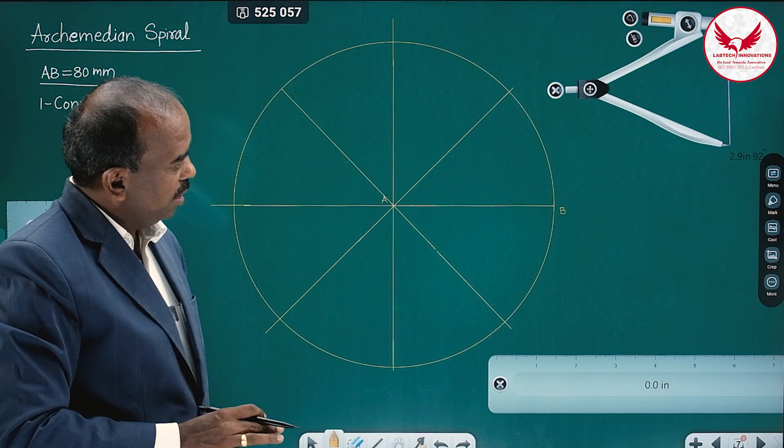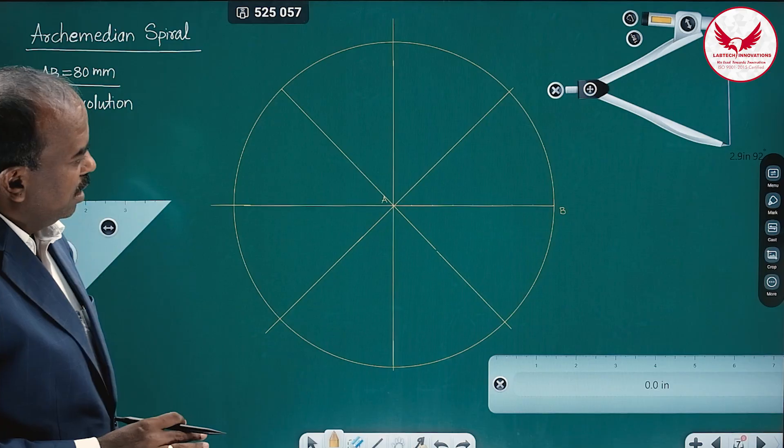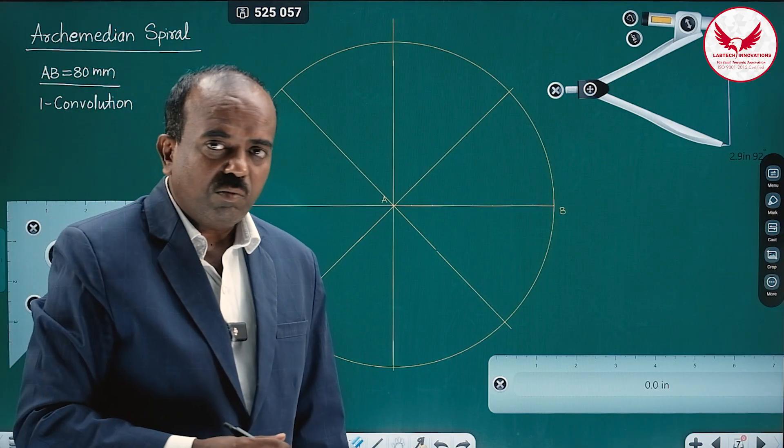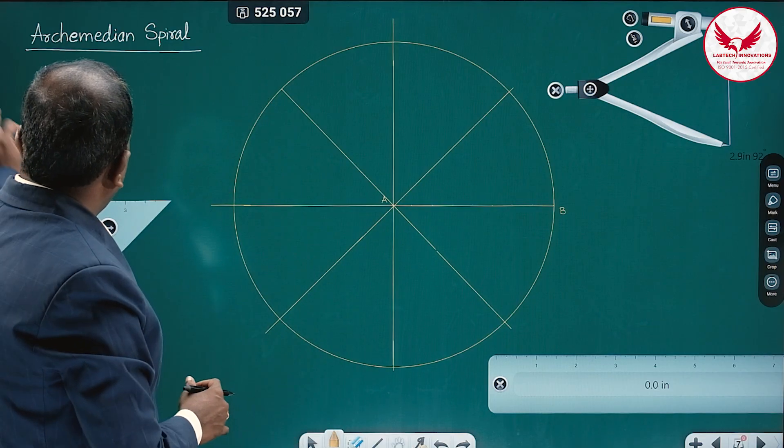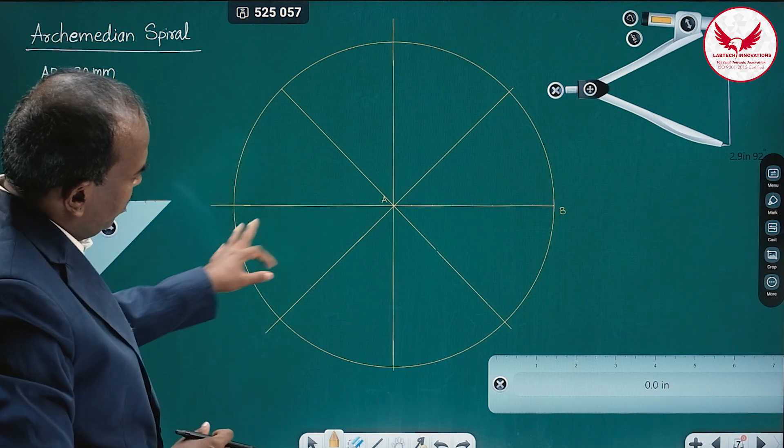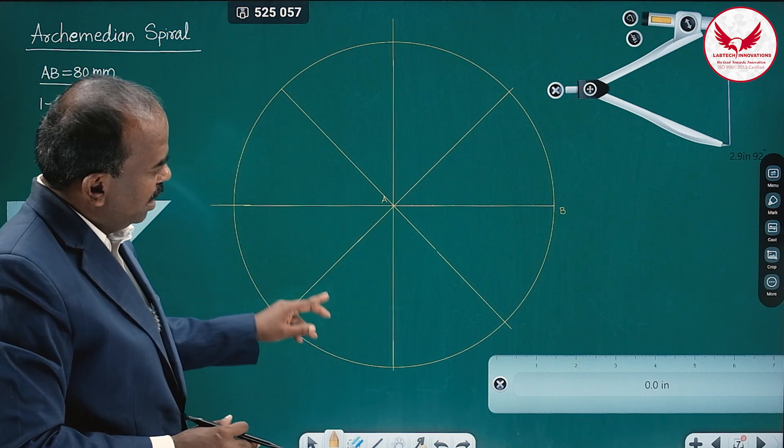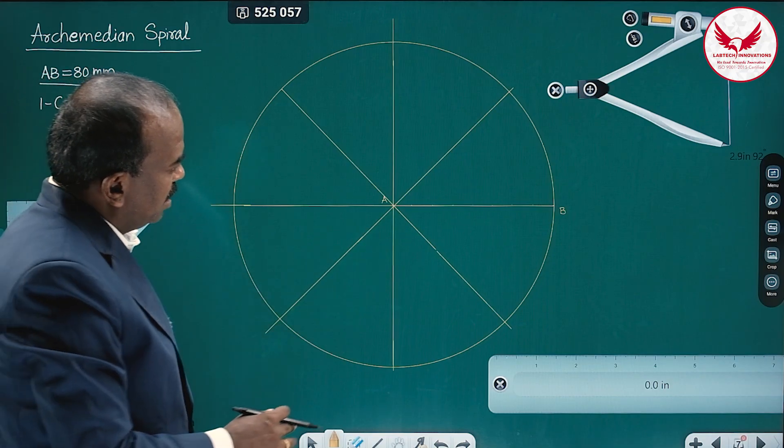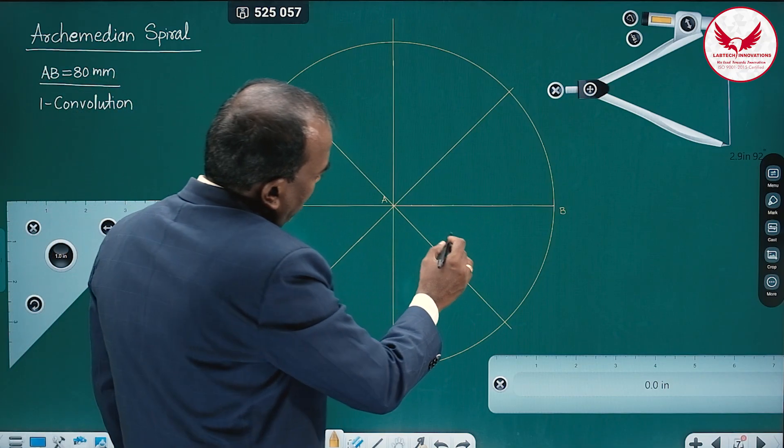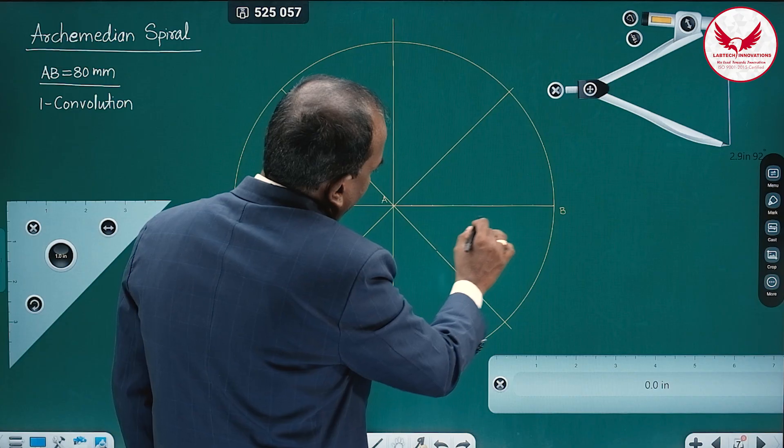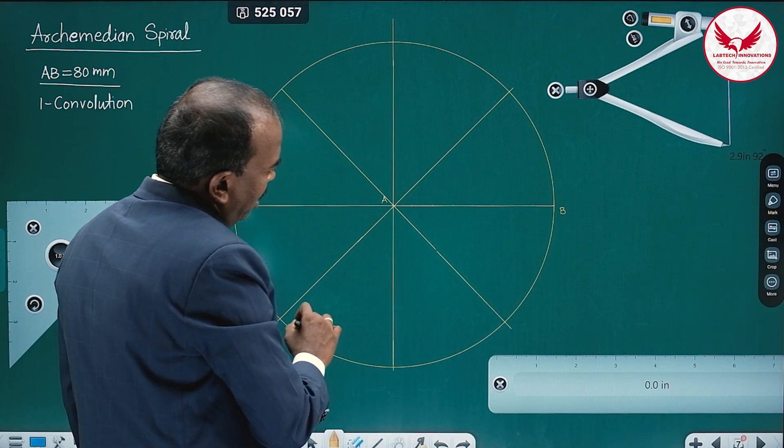The basic requirement of spiral is: drawing the circle with the radius equal to length of the line, 80 mm. And it has been divided into eight equal parts. At the same time, 80 distance also we have to divide it into eight equal parts. We have marked 10, 10, 10. 80 by 8 is 10.